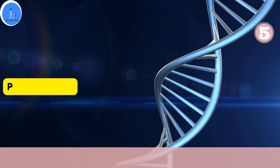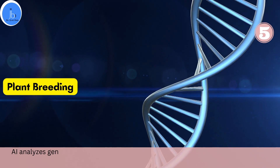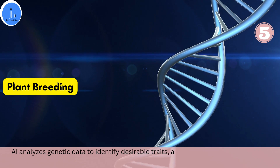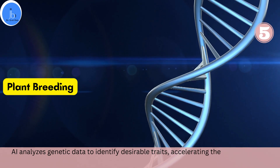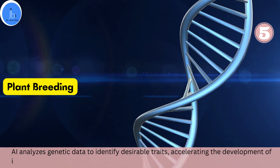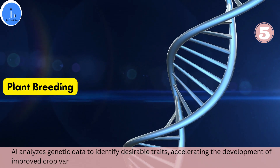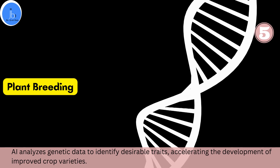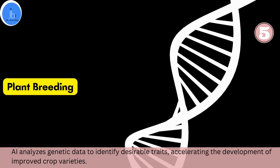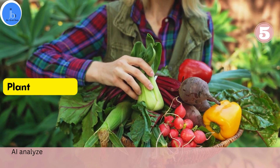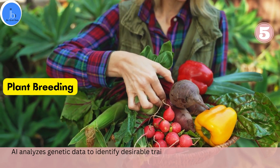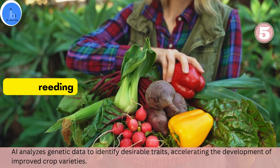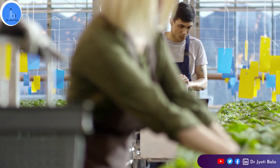The fifth area is plant breeding. AI and machine learning algorithms can accelerate the process of plant breeding by analyzing vast amounts of genetic and phenotypic data. By identifying genetic markers associated with desirable traits such as disease resistance or yield potential, these algorithms can assist in selecting the most promising plant varieties for further breeding, leading to the development of improved crop varieties that are more resilient, productive, and adapted to specific environmental conditions.